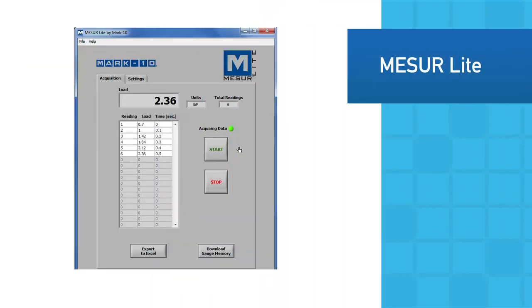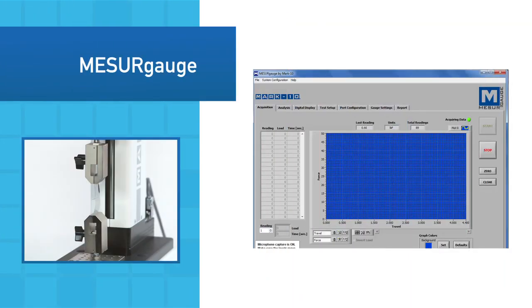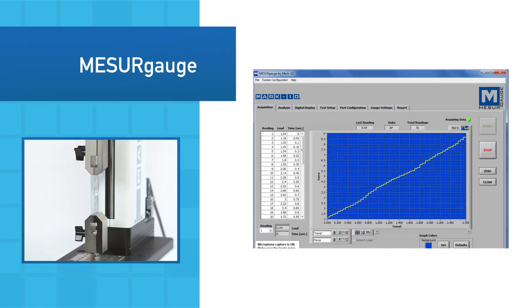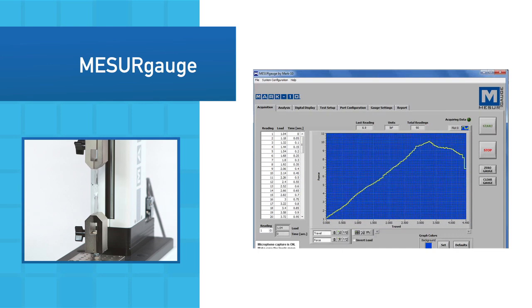The included MeasureLite data collection software tabulates data and allows for export to Excel. The more advanced measure gauge graphs data, calculates statistics, generates reports, and performs other functions.